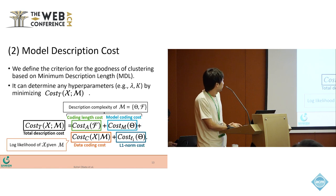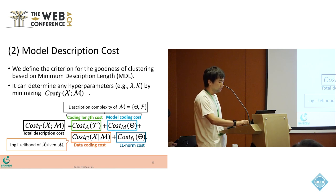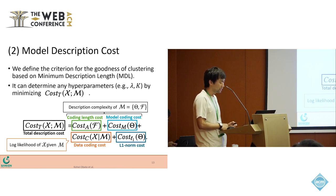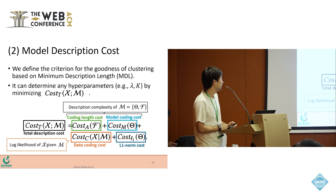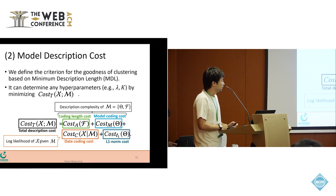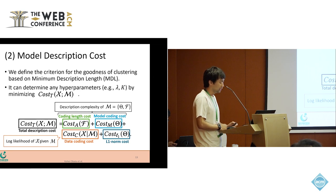Here we talk about our cost function. We define the cost function as a criterion for the goodness of clustering, based on the minimum description length (MDL). MDL assumes that the more we compress the data, the more we generalize its underlying structures.